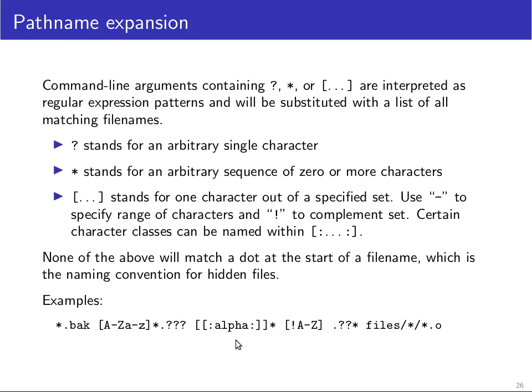You can negate the set. So this is one character with all possible characters except uppercase A to uppercase Z. And none of these will match a dot at the start of a filename. So if you have a star, for example, then you will only get the visible filenames. Only if you type dot star, then you will get the invisible filenames.